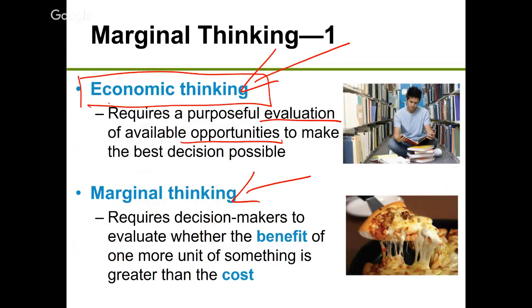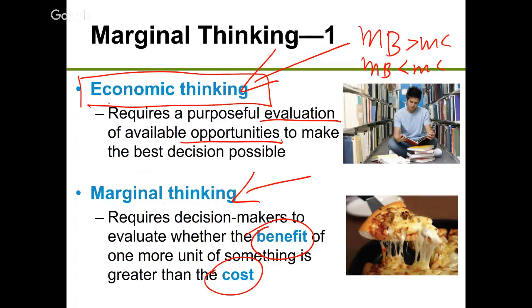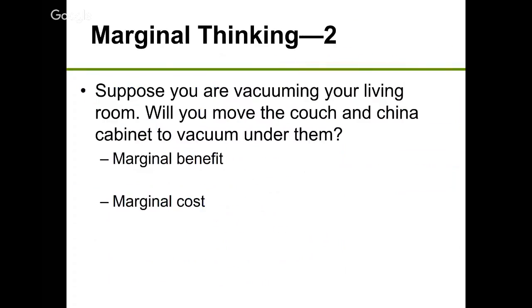All this decision-making is based on marginal thinking — we compare marginal benefit and marginal cost. If marginal benefit is greater than marginal cost, we do it. If marginal benefit is less than marginal cost, we don't. For everything you do, we try to compare what our marginal benefit and marginal cost are.